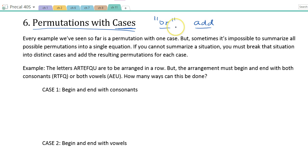So the key here is when you find yourself using the English word OR, it's likely a case and you're probably going to be adding. The cases are for when you're doing this or that, and then you end up adding instead of multiplying. Every example we've seen so far is a permutation with one case. But sometimes it's impossible to summarize all possible permutations into a single equation. If you cannot summarize a situation, you must break that situation into distinct cases and then add the resulting permutations for each case.